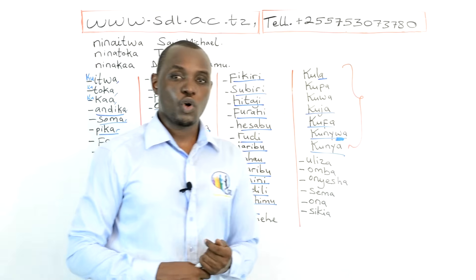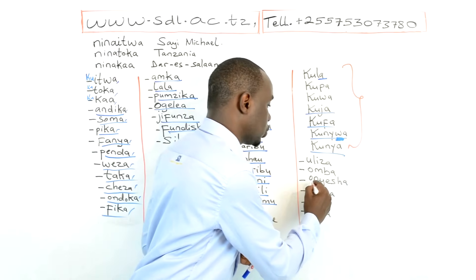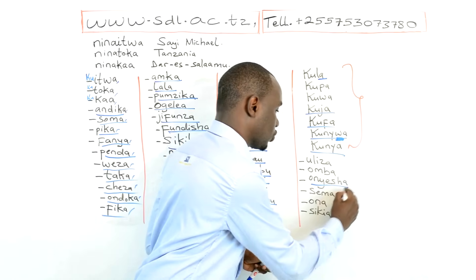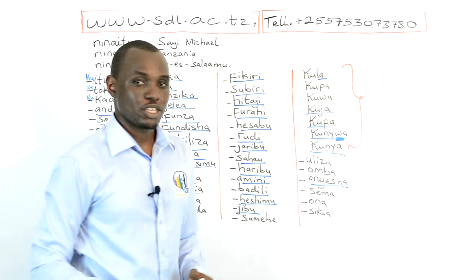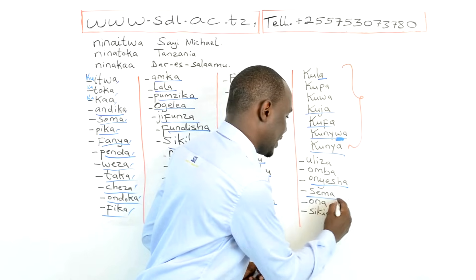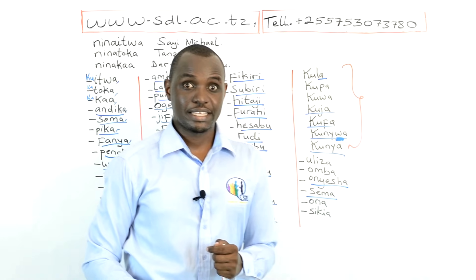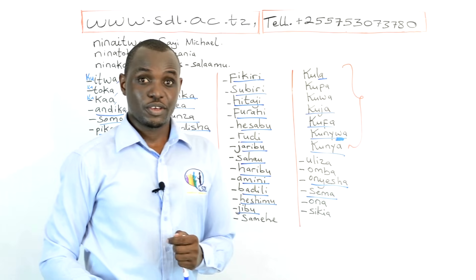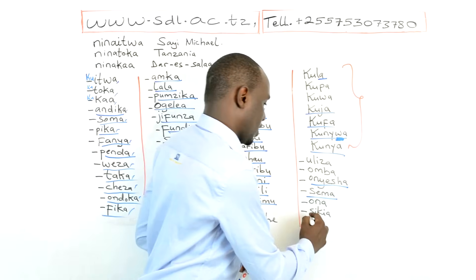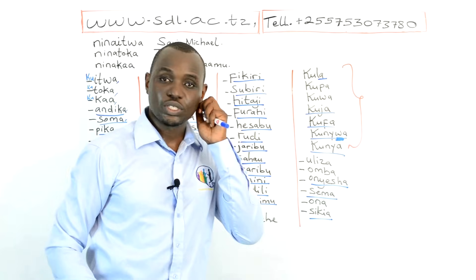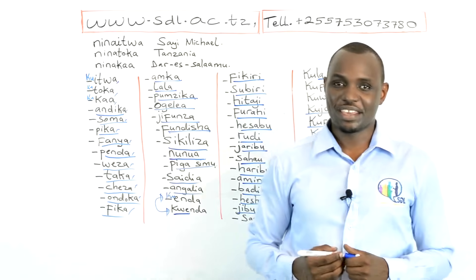Onyesha means show; Ku Onyesha means to show. Sema means say; Ku Sema means to say. Ona means see; Ku Ona means to see. Sikia means hear; Ku Sikia means to hear.